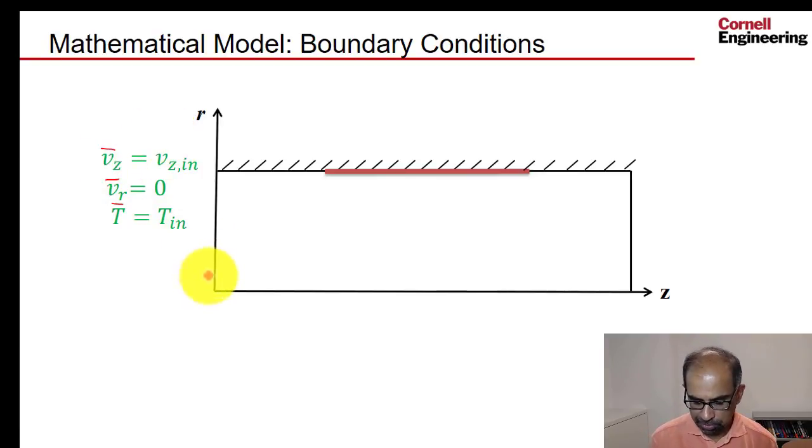And essentially what we're doing with the velocity is we are specifying a constant velocity along the inlet and that's mostly constant. And we know what that velocity should be because the mass flow rate is known from the experiment.